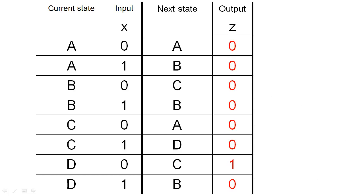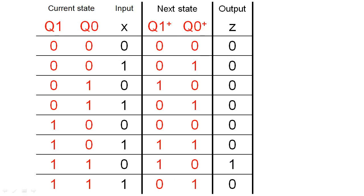Now that we have our next state table, we need to encode our states with the flip-flop bits. Because we have 4 states, we will use 2 state variables to encode the current state, and consequently we will use 2 state variables to encode what the next state will be after the clock edge. We can assign these bits arbitrarily, so we will use 00 for A, 01 for B, and so forth.